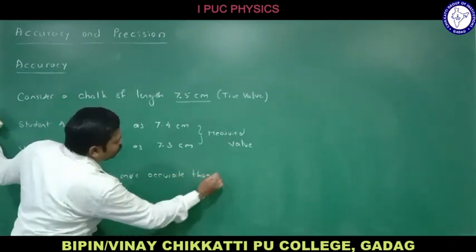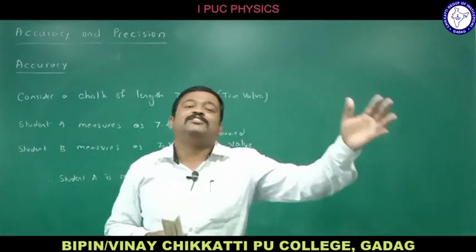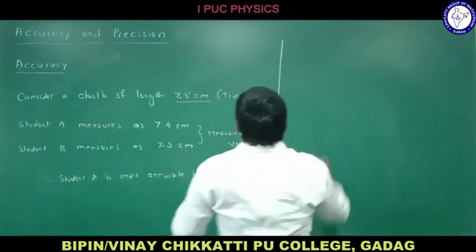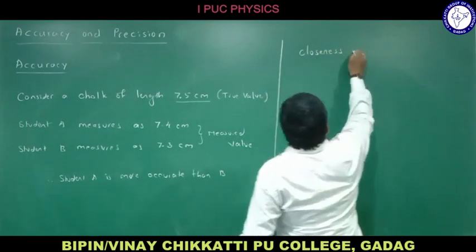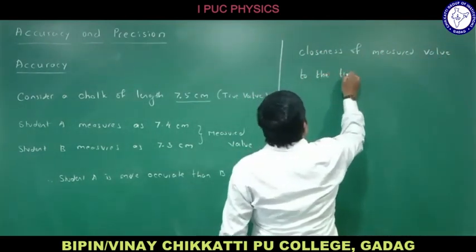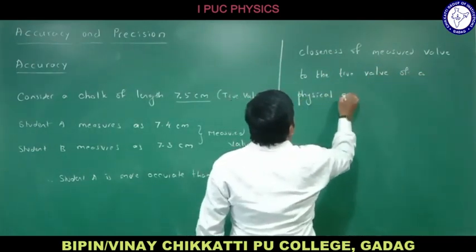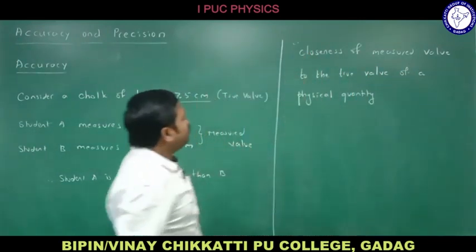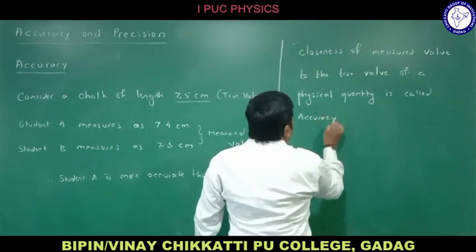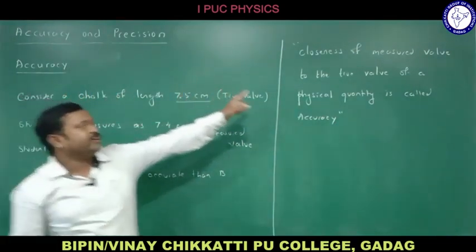Accuracy is defined as the closeness of the measured value to the true value of a physical quantity. The closer the measured value is to the true value, the more accurate the reading is. That is why student A is more accurate than student B.